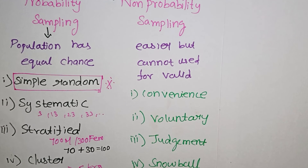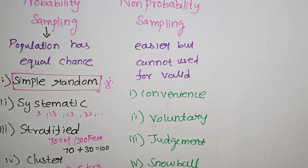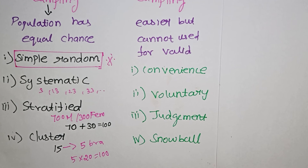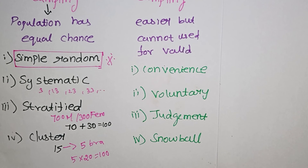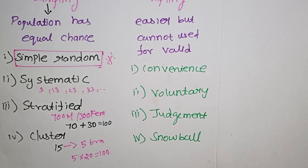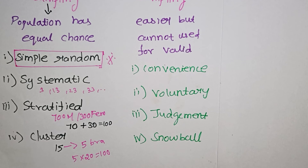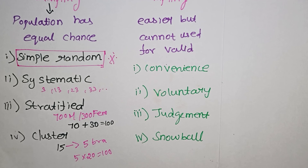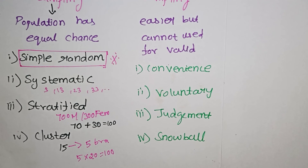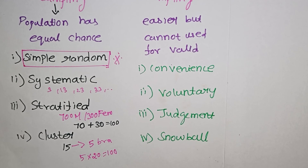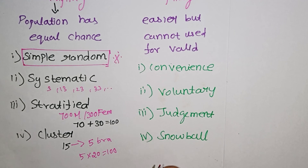Snowball sampling: for example, if you are researching child labor, you start with one child laborer and use that contact to find more. You collect data from one child, then that child refers you to others, and so on. That is snowball sampling.